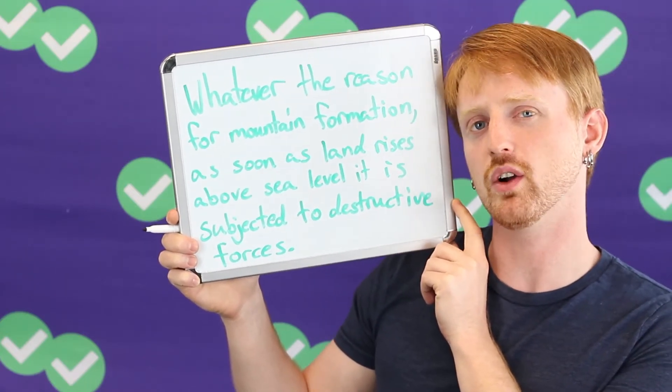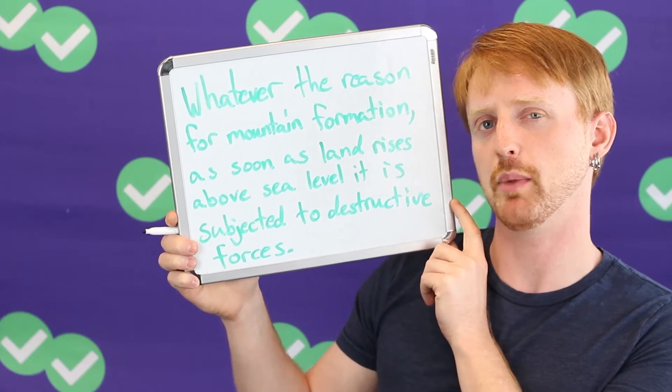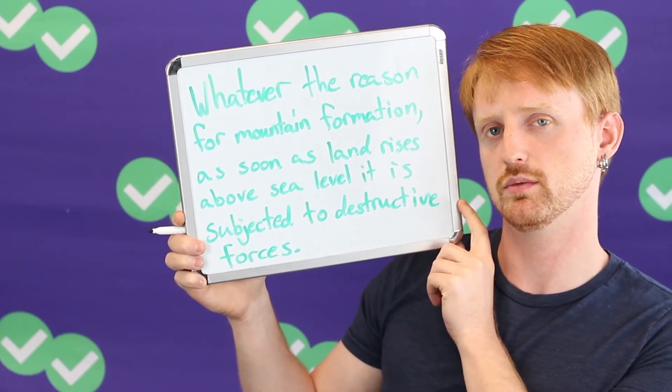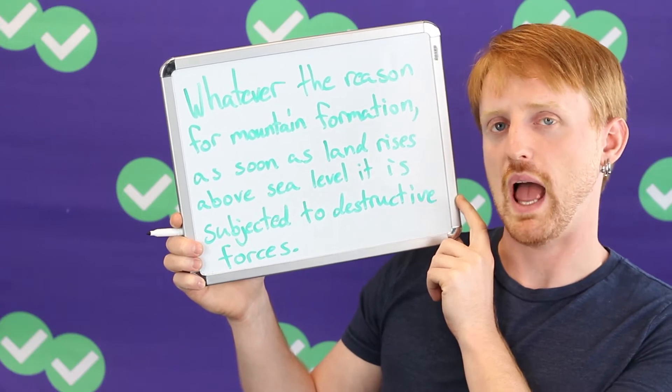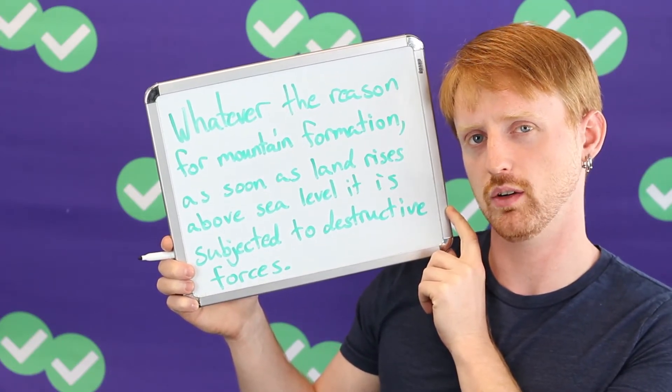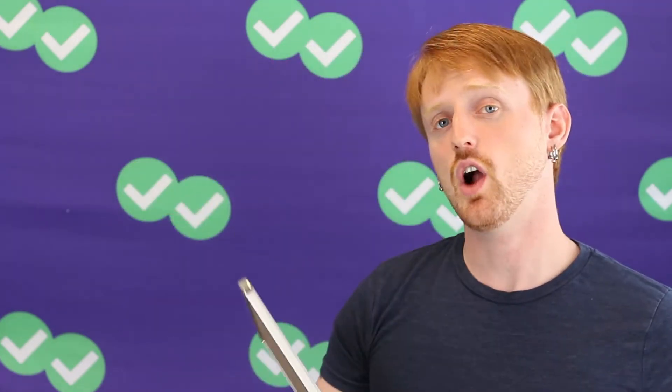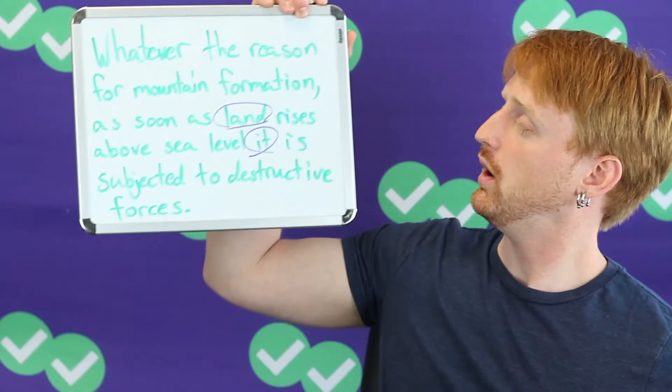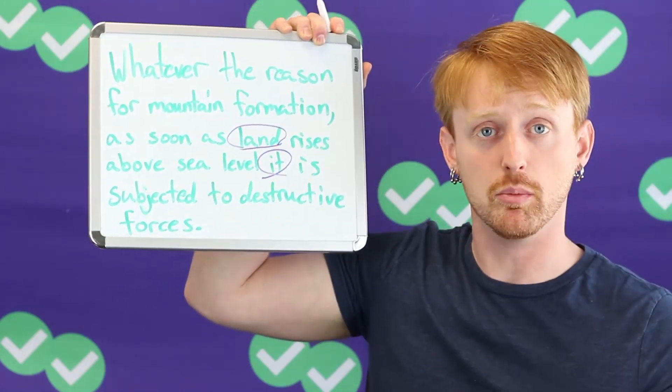Where is the subject and where is the verb? Think about this for a minute. How many subjects are there? How many verbs are there? What's the relationship? There are a couple of subjects here: land and it.